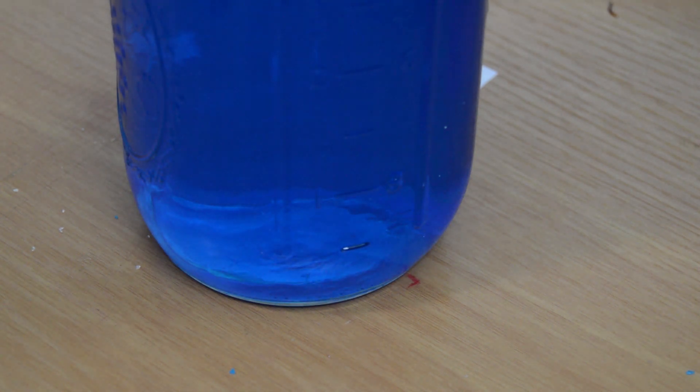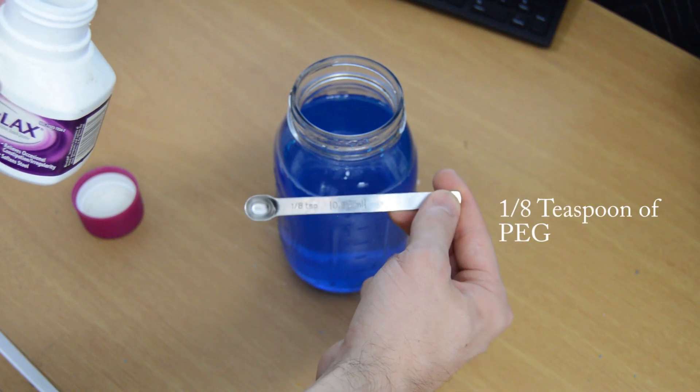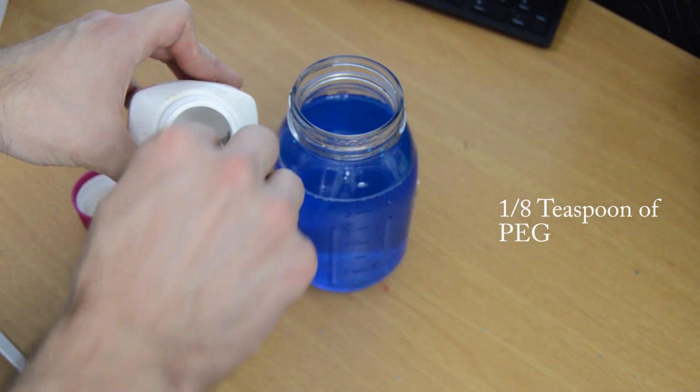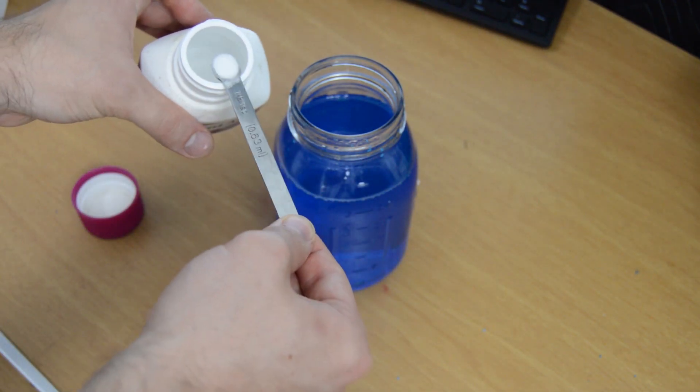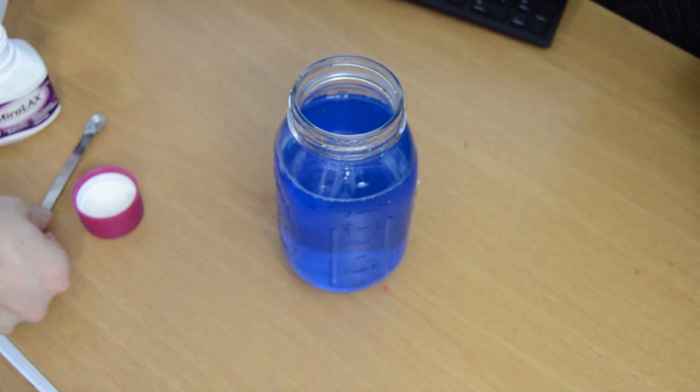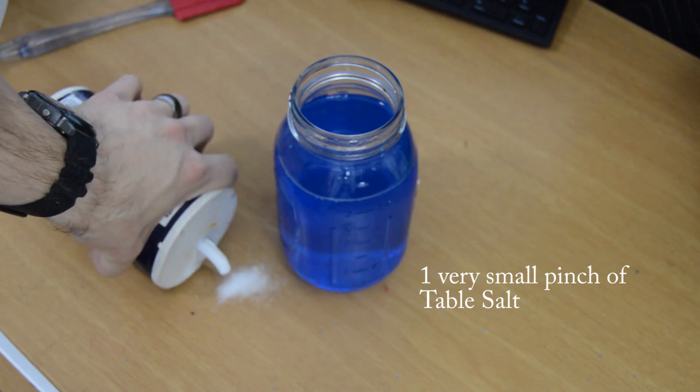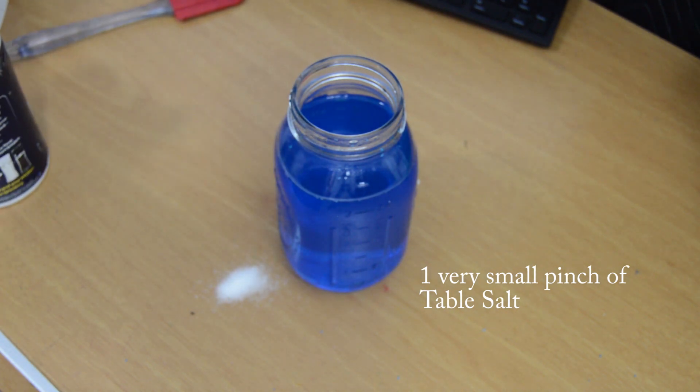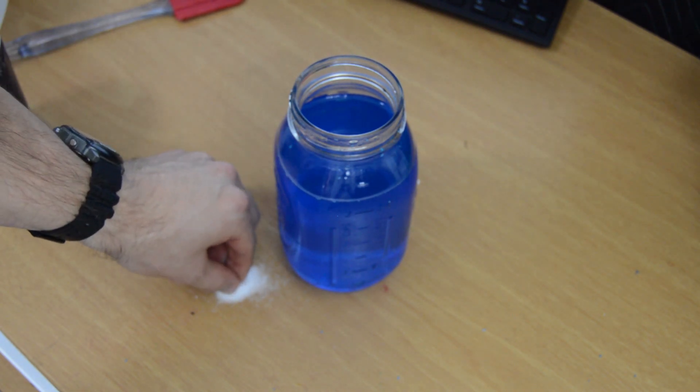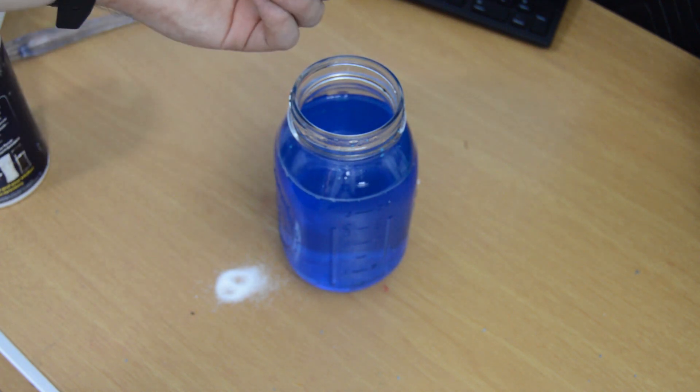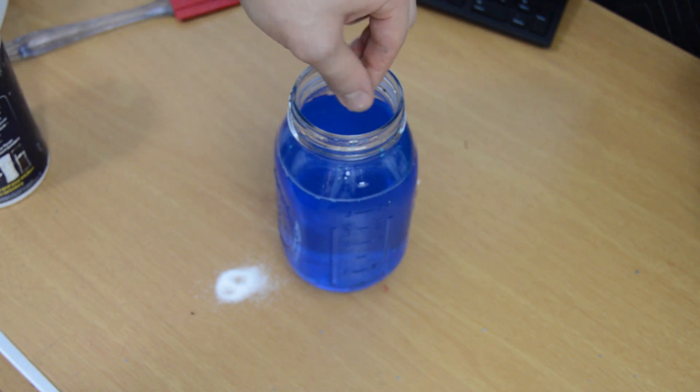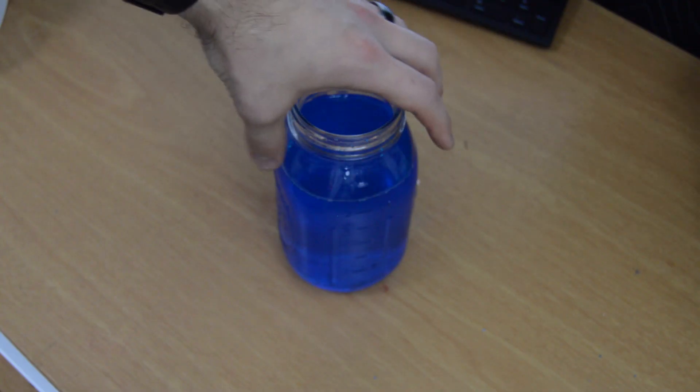Once the copper sulfate crystals have fully dissolved, add 1 1/8 teaspoon of laxative and mix completely. Finally, add a small pinch of salt. And by small, I mean very small. The chlorides will ensure the proper corrosion of the copper electrodes and you honestly just don't need that many. Once all the chemicals are mixed, cap the mason jar and set it aside.